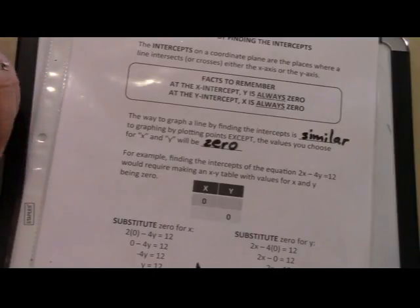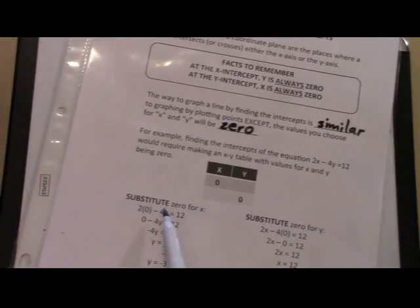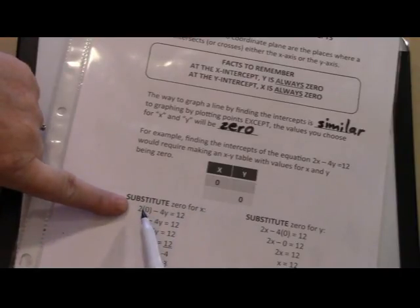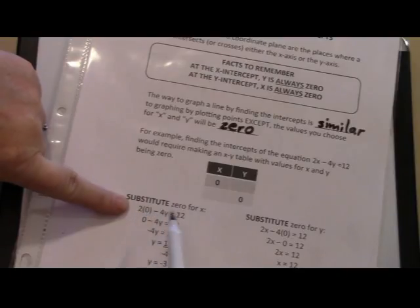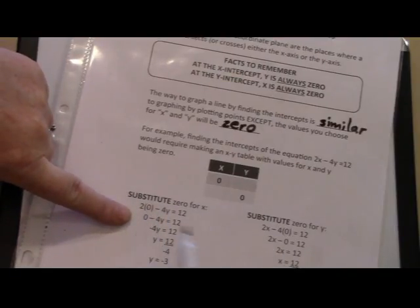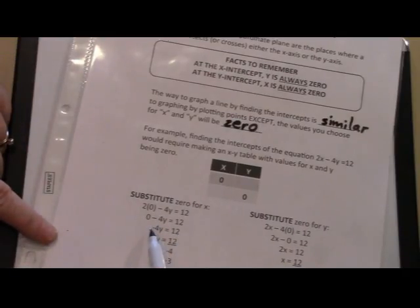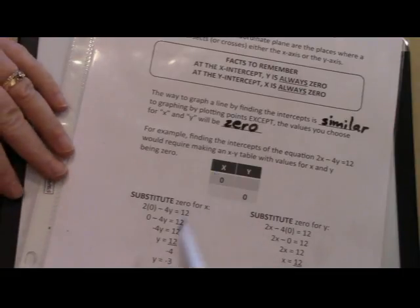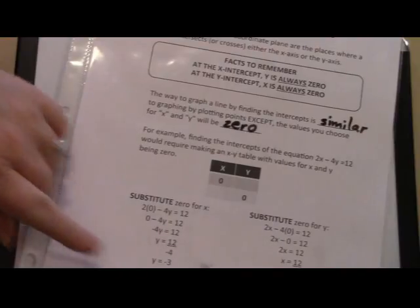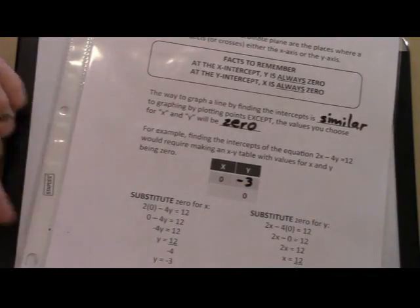We're going to solve this equation 2 times. We're going to first substitute x to be 0, and it will look like this. Instead of 2x minus 4y, we have 2 times 0 minus 4y. 2 times 0 is 0. We end up with negative 4y equals 12. The opposite to unstick that negative 4 and the y is to divide by negative 4. So here we have 12 divided by negative 4, y equals negative 3. So when x is 0, our input, our output is our answer, y is negative 3.